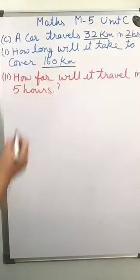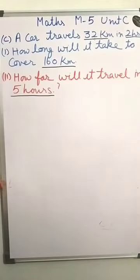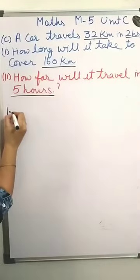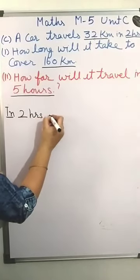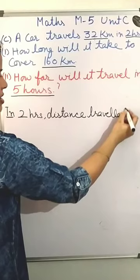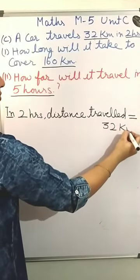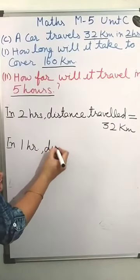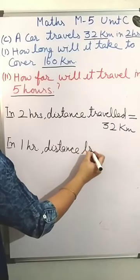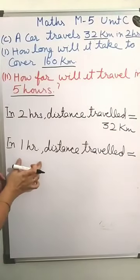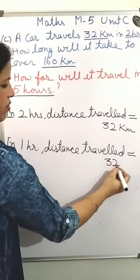Now come to the second part of the question. How far will the car travel in 5 hours? For this, first we calculate the distance travelled in 1 hour. 2 hours distance travelled is equal to 32 km. So in 1 hour, distance travelled — we divide because we are calculating value of 1. 32 divided by 2 is equal to 16 km.